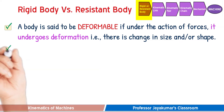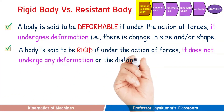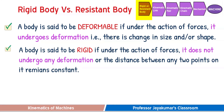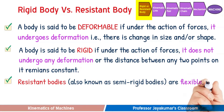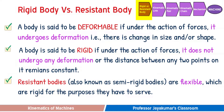If a body under the action of forces does not undergo any deformation — that is, the distance between any two points on the body remains constant even after application of forces — then we call that body a rigid body. Resistant bodies, also known as semi-rigid or flexible bodies, will undergo partial deformation, but it does not affect the transmission of motion in any way. So resistant bodies can be assumed as good as rigid for the purpose of study.